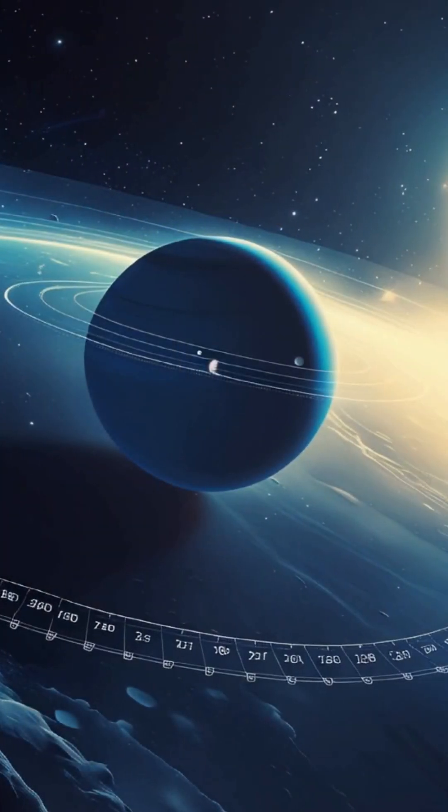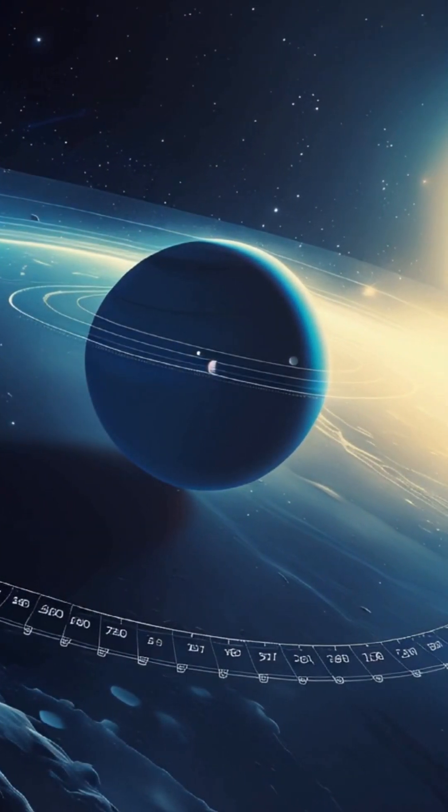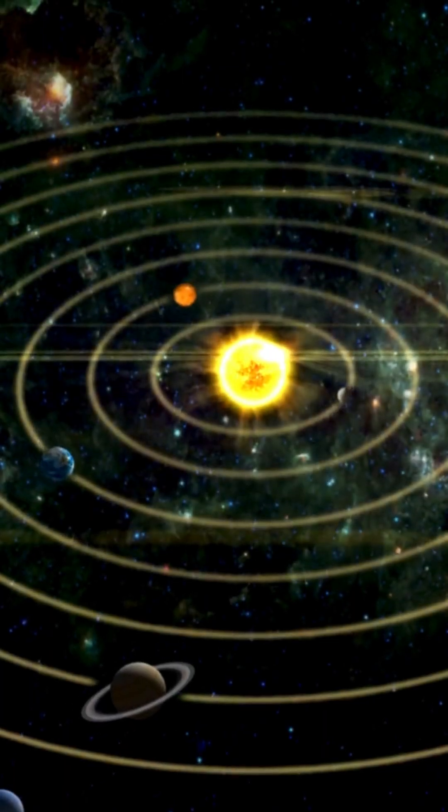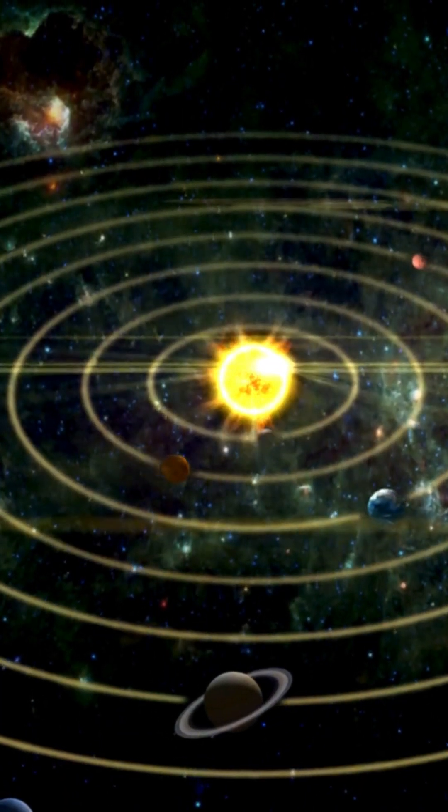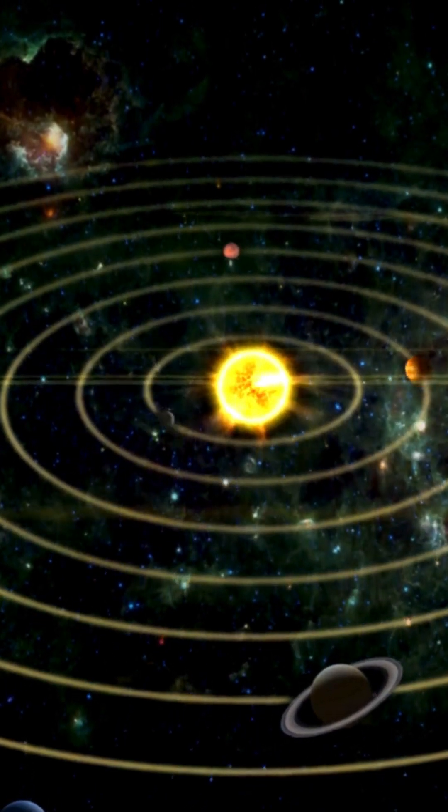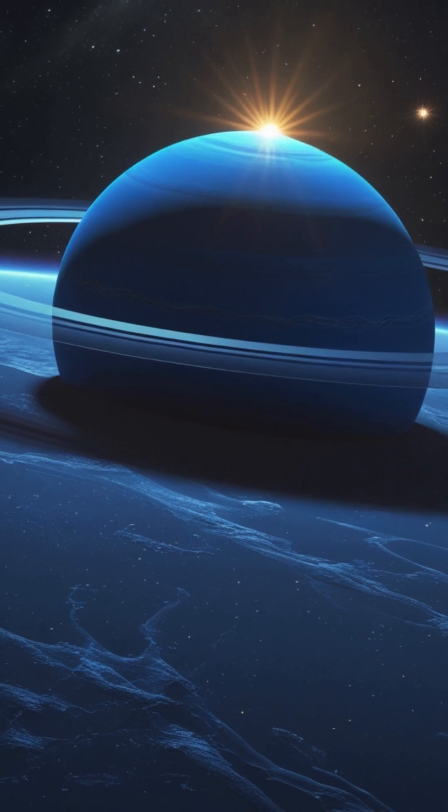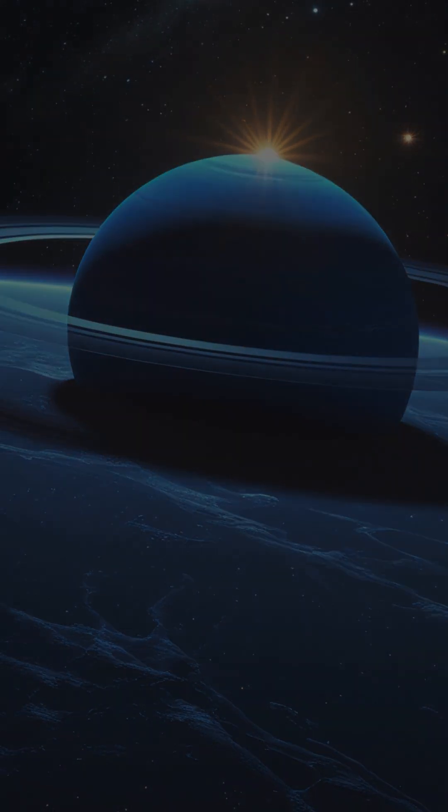Fact number three, a year on Neptune lasts 165 Earth years. Since Neptune is so far away, it takes a whopping 165 years to complete just one orbit around the sun. That means if you were born on Neptune, you wouldn't even be one year old yet.